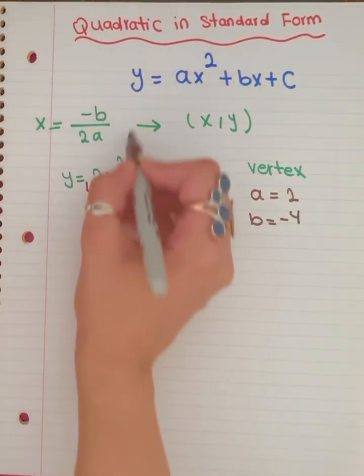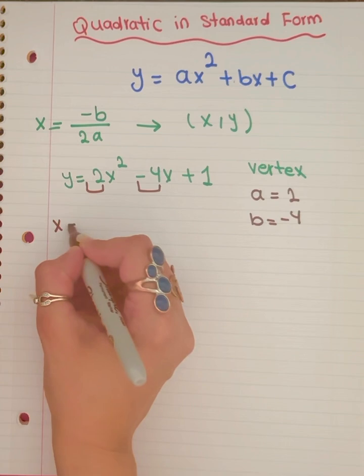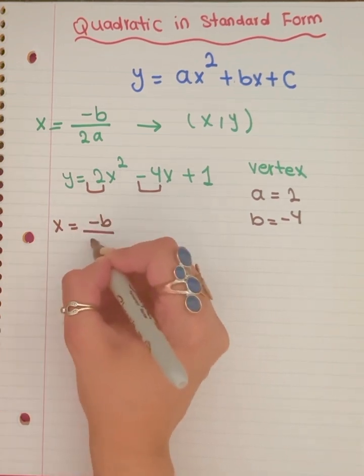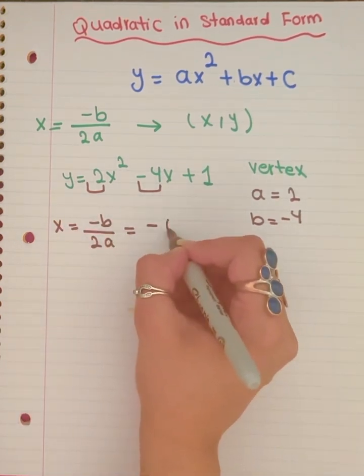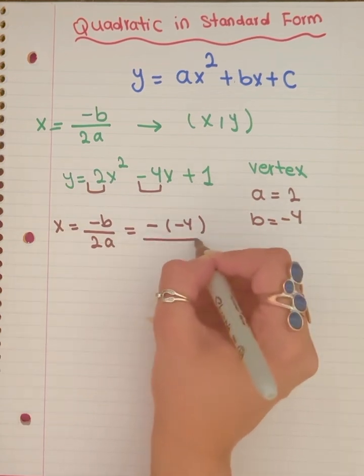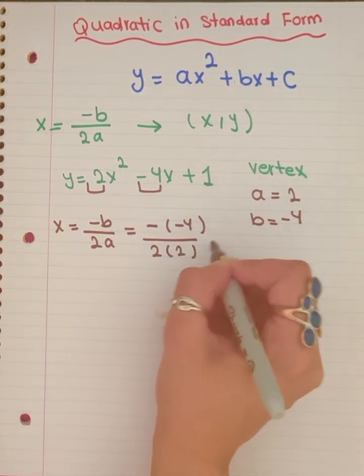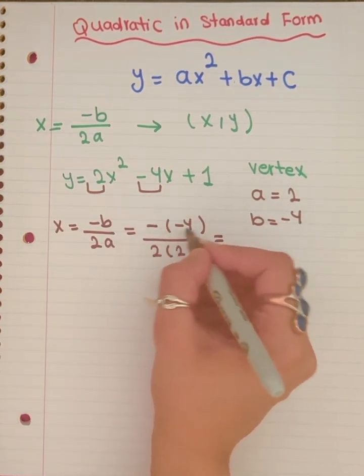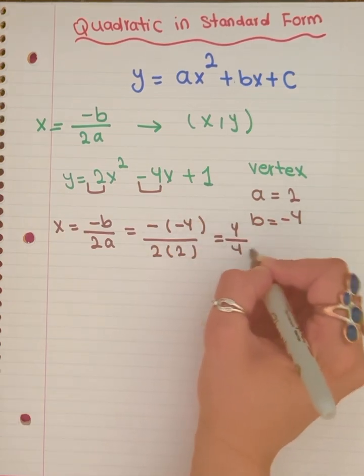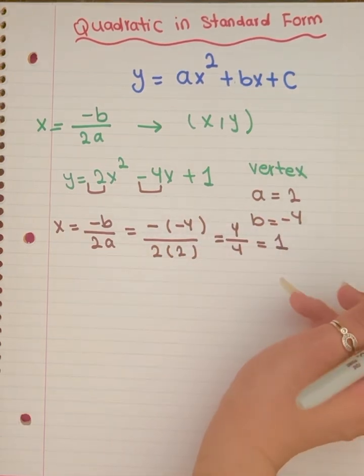We have to use this formula. x equals negative b over 2a, which is going to equal negative negative 4 over 2 times 2. Negative 1 times negative 4 is 4 and 2 times 2 is 4. So the simplified form is 1.